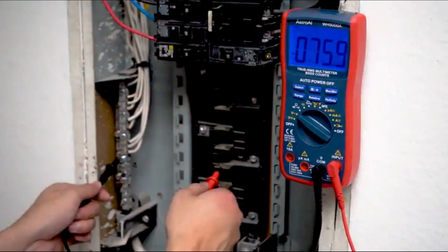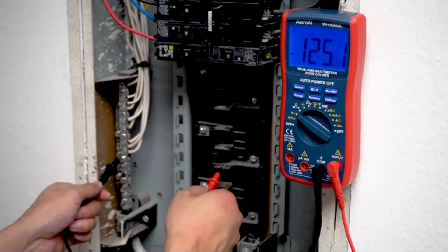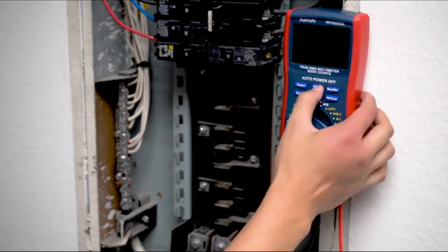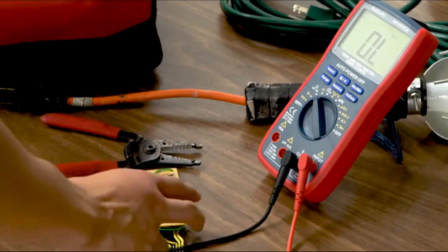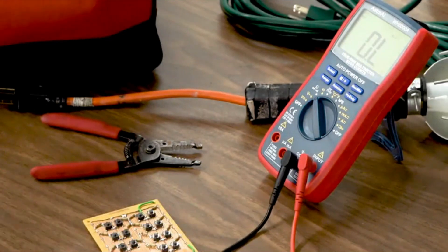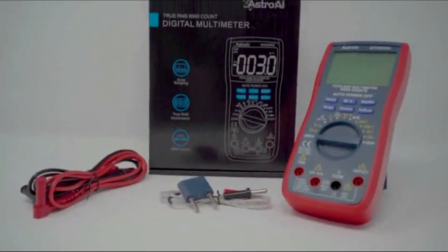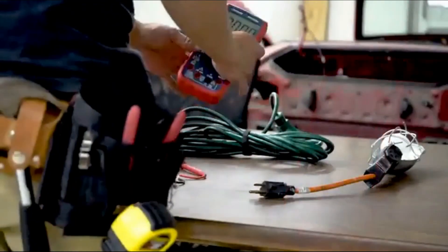A multimeter is an essential tool for any mechanic or technician. It measures voltage, current, and resistance among other things. With all the different models on the market, it can be difficult to determine which one will best suit your needs. The following video reviews five of the most popular online search results for best multimeters and highlights their advantages and disadvantages.